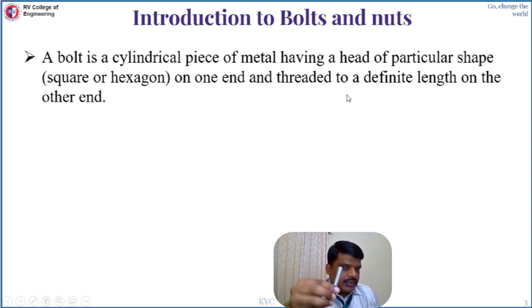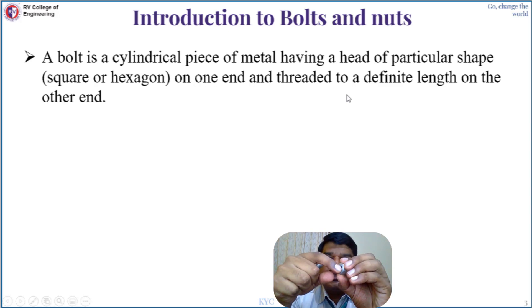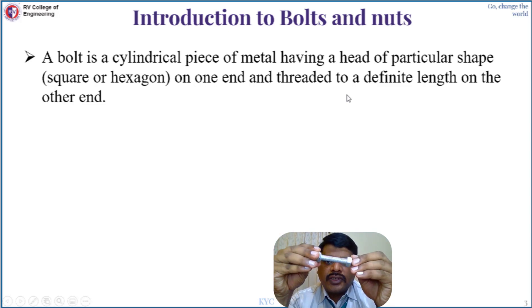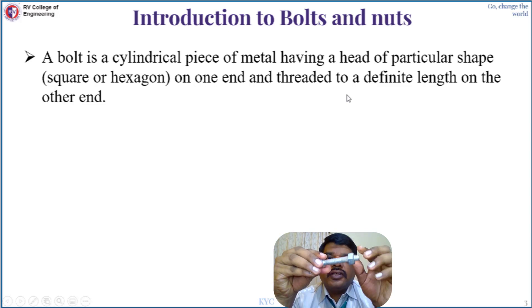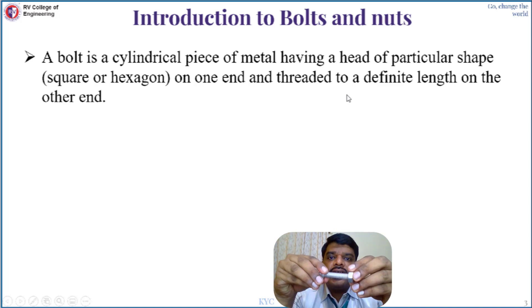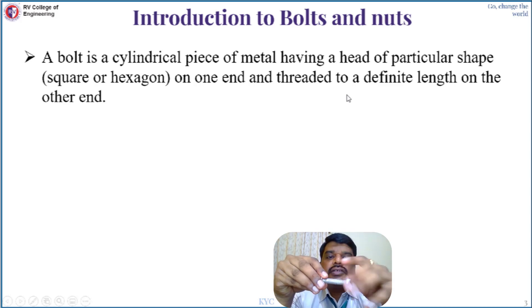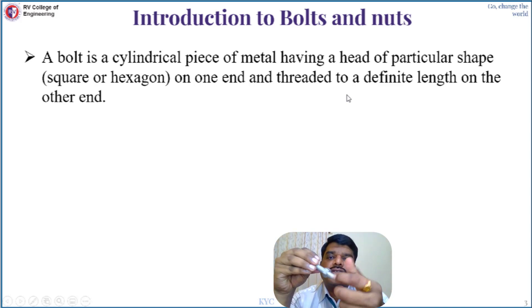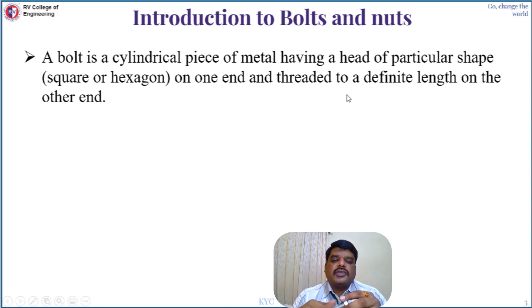Similarly, in a nut we have internal threading — you can see the internal threads. Both internal and external threads can be mated easily, so the bolt and nut can be assembled. In between the bolt and nut you can place two or more objects and clamp them together. We also have a washer, which is inserted between the bolt and nut so that the clamping or gripping force will be more on the object you want to hold.